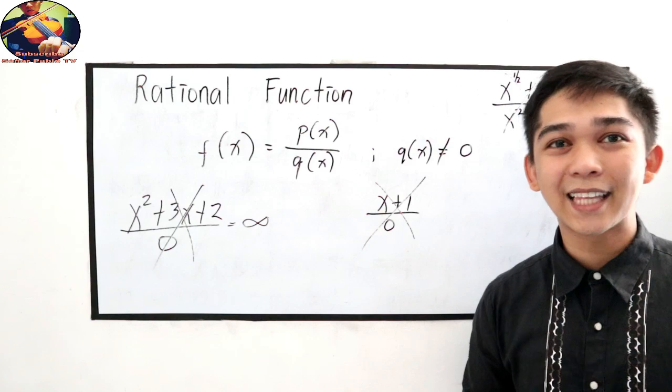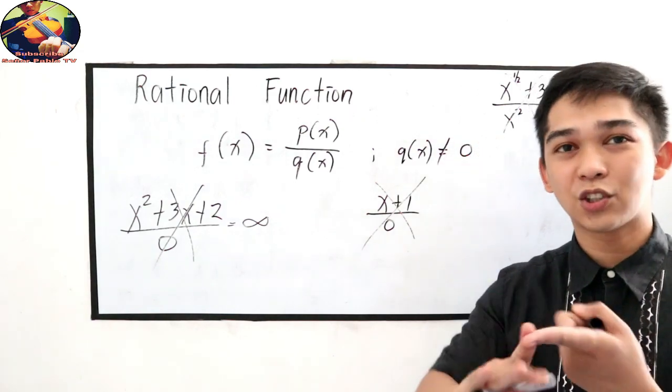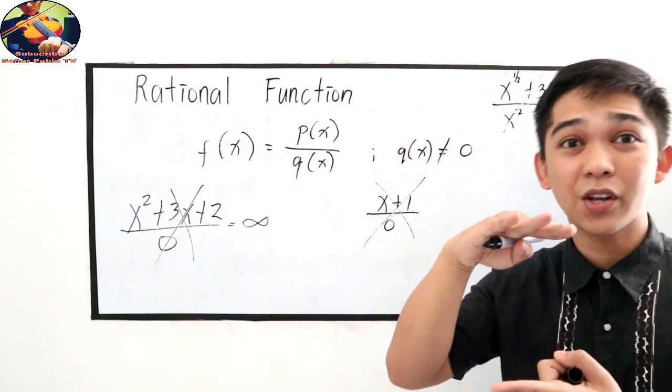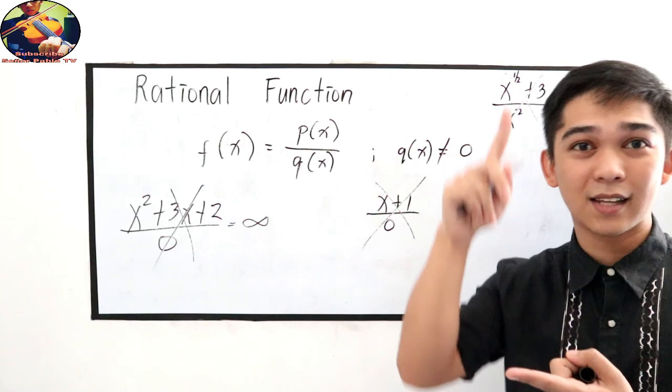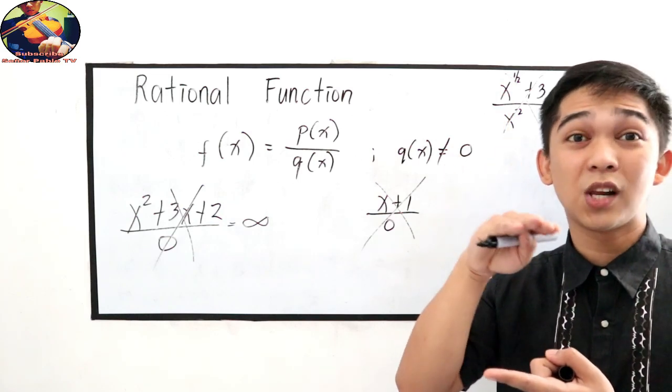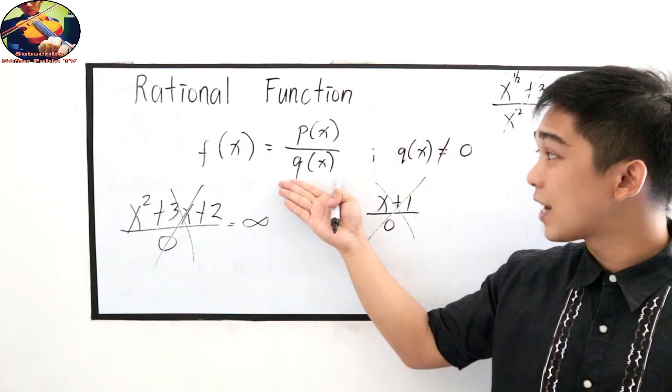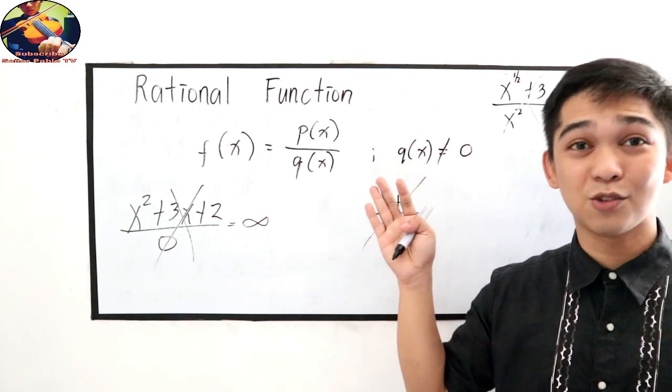Dapat pasok yung condition natin sa polynomial function. Kaya ni-recall natin sa previous lesson. Kapag di pa napapanood, punta lang sa what is polynomial function. Then condition natin dito, q of x might not be equal to 0.